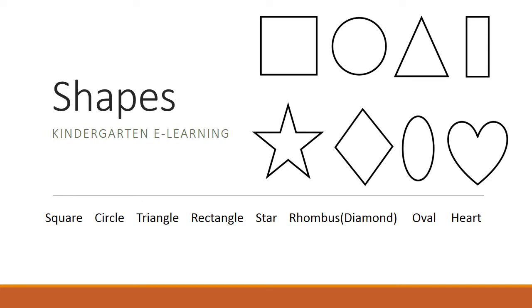They are square, circle, triangle, rectangle, star, rhombus or diamond, oval, and heart.